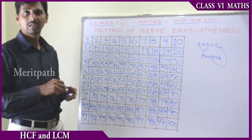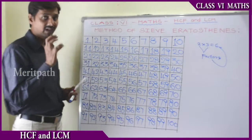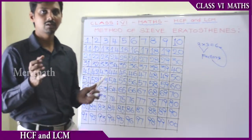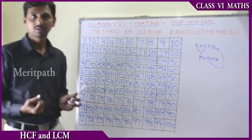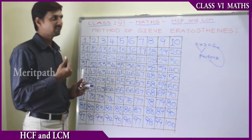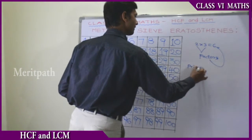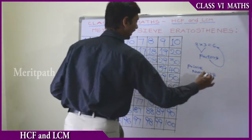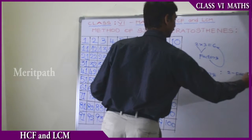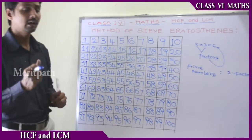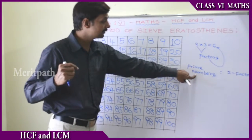So let's see what are the factors. For 2, we know the concept of prime numbers. A prime number will have only 2 factors — the number itself and also 1. So the numbers which are having only 2 factors are called prime numbers. That concept we have learnt.